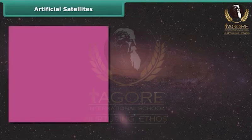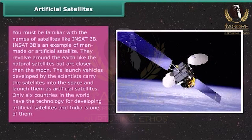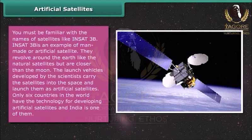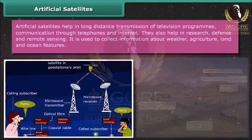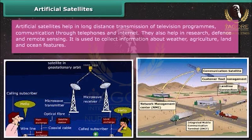INSAT-3B is an example of a man-made or artificial satellite. Artificial satellites revolve around the Earth like natural satellites, but are closer than the Moon. Launch vehicles developed by scientists carry the satellites into space. Only six countries in the world have the technology for developing artificial satellites, and India is one of them. Artificial satellites help in long-distance transmission of television programs, communication through telephones and the Internet. They also help in research, defense, and remote sensing — collecting information about weather, agriculture, land, and ocean features.